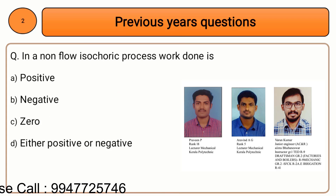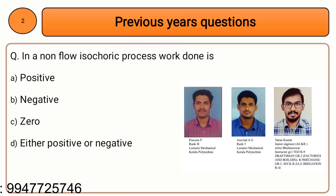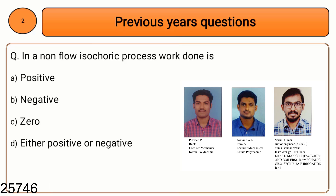Next question: in the isochoric process, work done is — option A: positive, option B: negative, option C: zero, option D: either positive or negative. This is a non-flow process in a closed system. The isochoric process is the constant volume process.